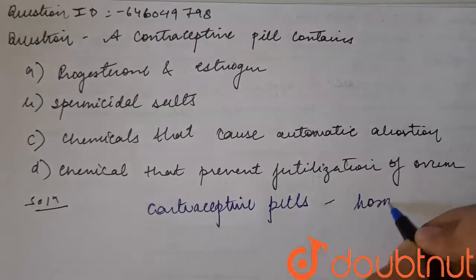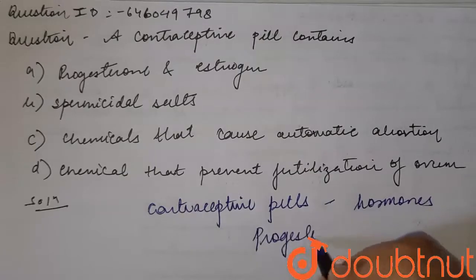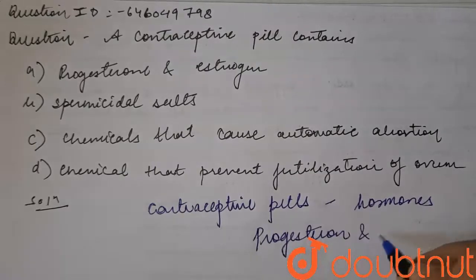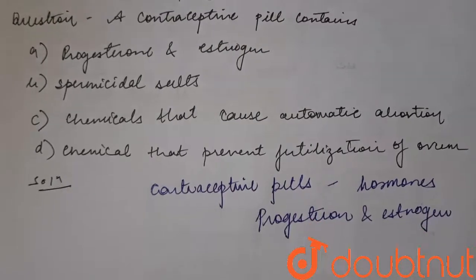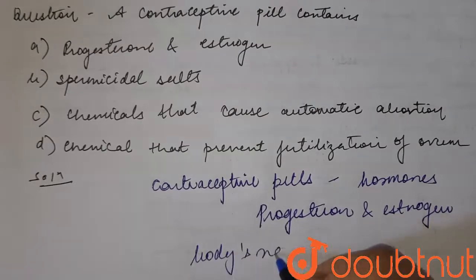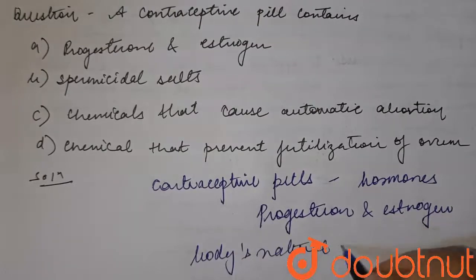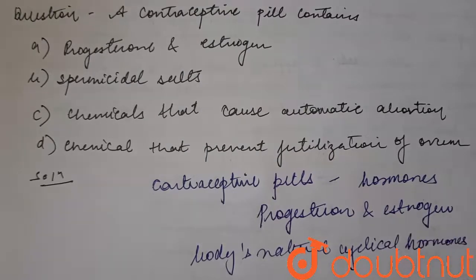Contraceptive pills contain hormones such as progesterone and estrogen. These work to inhibit the body's natural cyclical hormones and they prevent pregnancy.